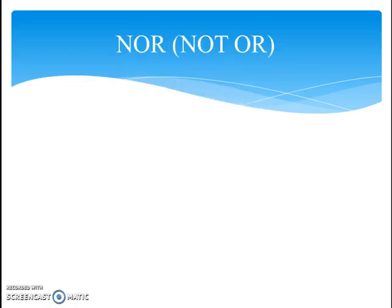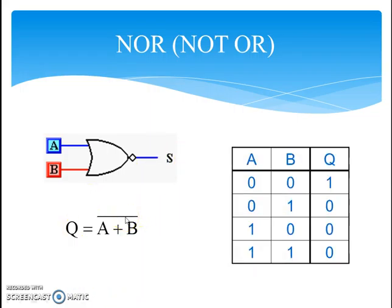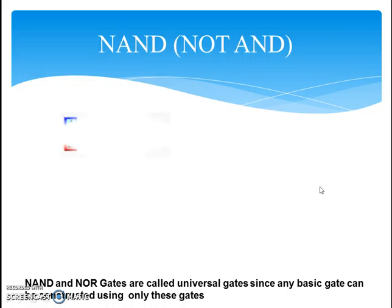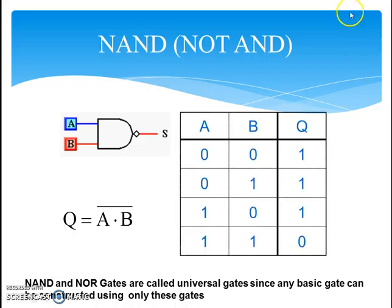The next gate is the NOR gate, which is actually the NOT OR gate — it is the complement of the OR gate. So A OR B, the whole complement, is the equation of the NOR gate, and its truth table is exactly opposite to that of the OR gate. Next is the NAND gate: its equation is A dot B, the whole bar — it is the complement of the AND gate. As a result, the truth table of the NAND gate is exactly opposite to that of the AND gate. One important thing to note is that NAND and NOR gates are called universal gates because any basic gate can be constructed using only these two gates.